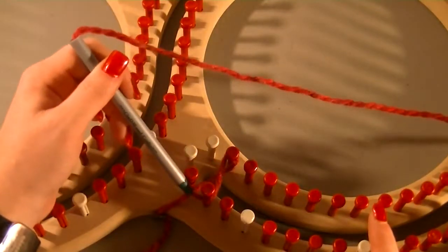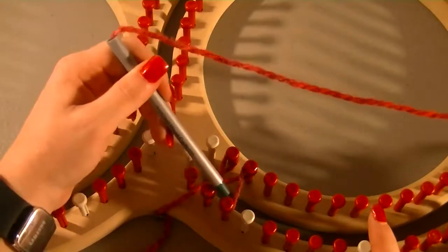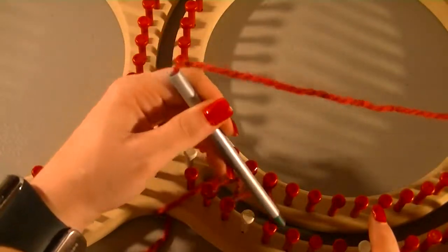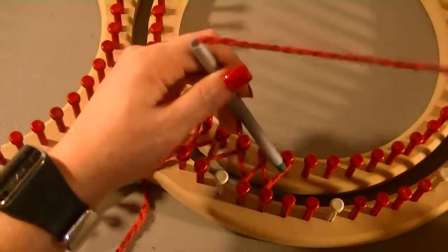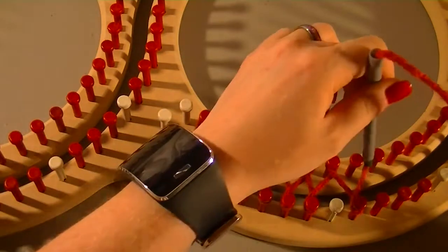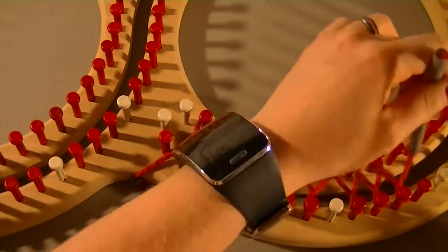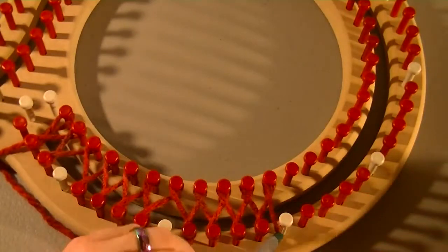The figure 8 is just like this - you can see it's a figure 8 shape going around both pegs. You just keep doing this, you do that figure 8 shape around the entire loom, and when you come to a white peg you skip it.